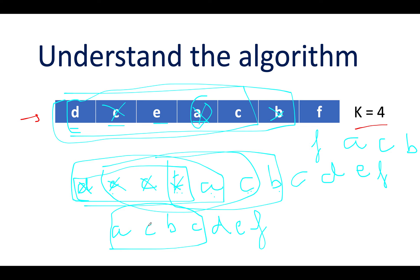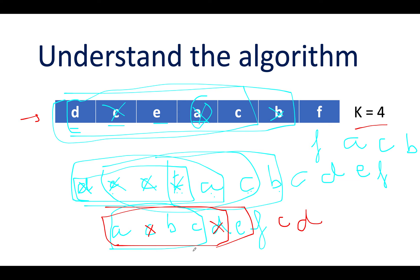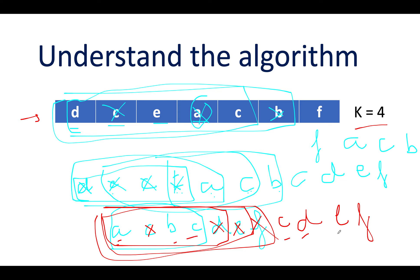Let me change pen color for clarity. This time remove C to the end — C goes here. I have A-B-C-D as my next options. I'll delete D — D goes to the end. Next I have A-B-C-E as my four options — delete E, E goes here. Next I have A-B-C-F — delete F. Now we have A-B-C-C-D-E-F. Coincidentally this is completely sorted!